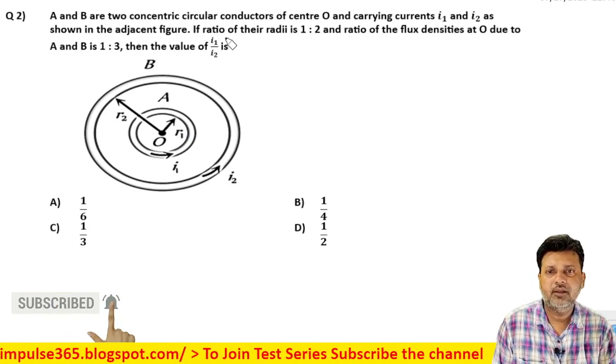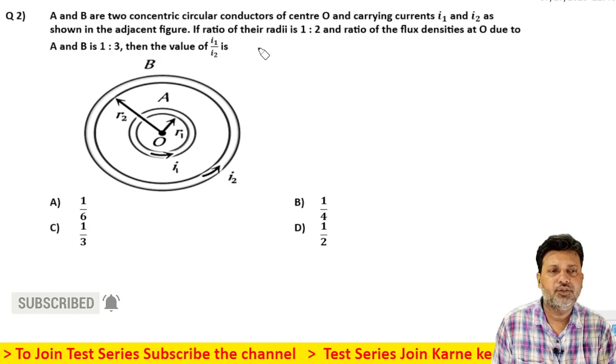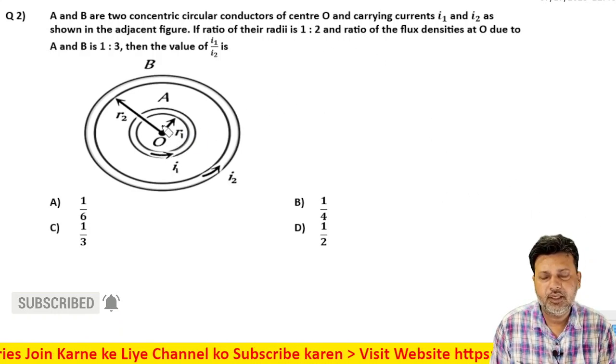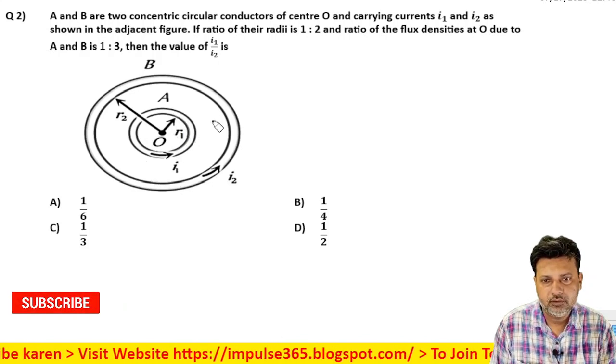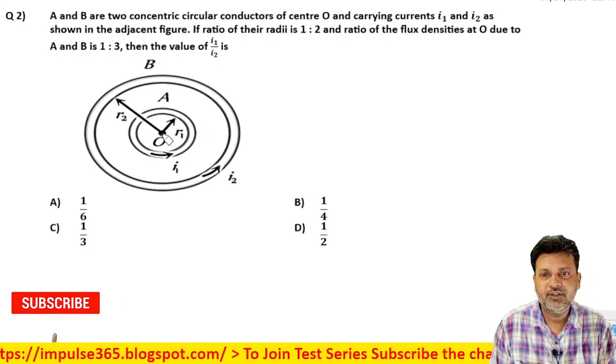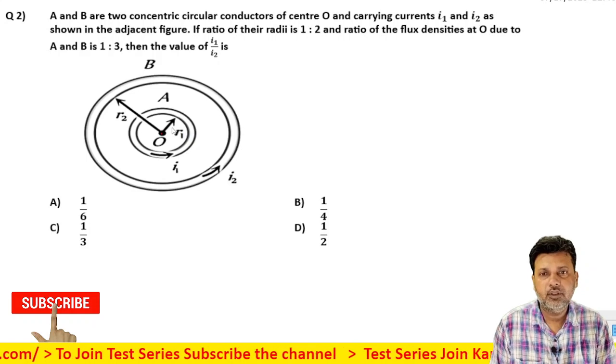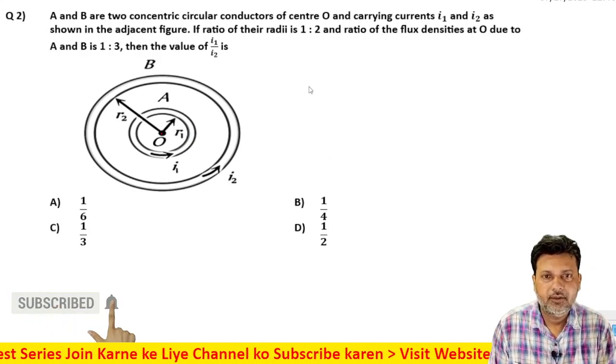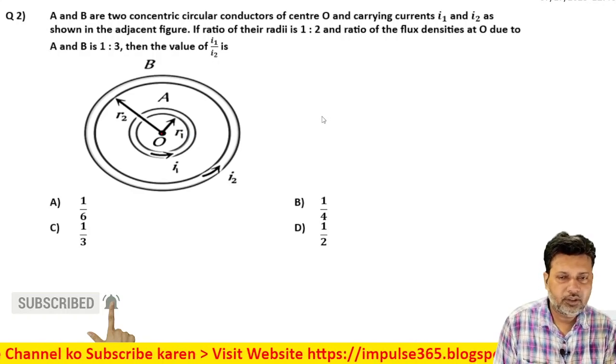Magnetic field ratio diya hua hai, radius ka ratio diya hua hai, current ka ratio pooch raha hai. Pehle dhyan dena hai ki current ki direction kya hai, dono coil mein - answer hai anti-clockwise, dono mein. To magnetic field ki direction center pe kidhar hogi? Outward direction mein, dono ki wajah se. Direction to dono ki wajah se same hogi.